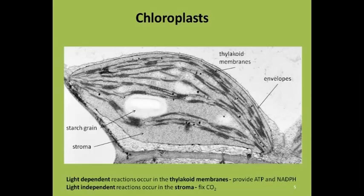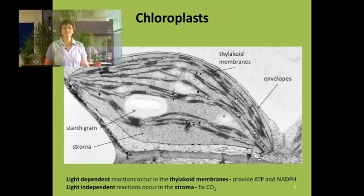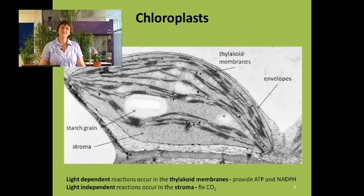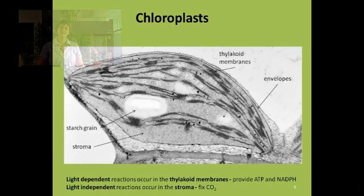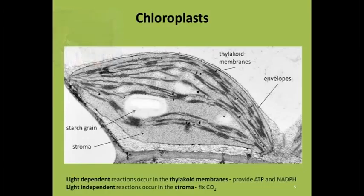Photosynthesis can be broken down into two distinct but linked stages. The light-dependent reactions occur in the thylakoid membranes and convert the sun's energy into chemical energy — ATP and reducing power, NADPH — and release oxygen. The light-independent reactions occur in the stroma, fix CO2, and use the ATP and NADPH produced by the light reactions to do so.